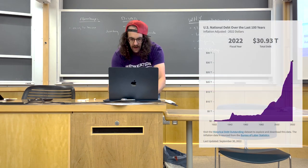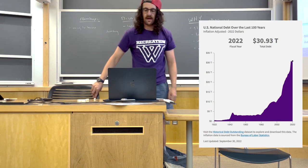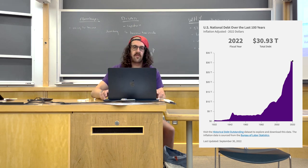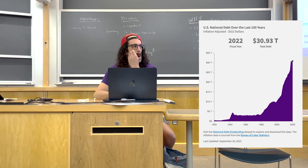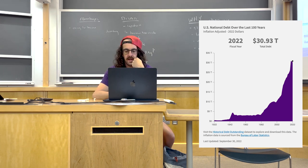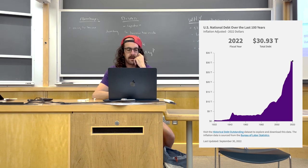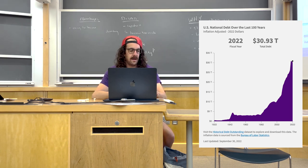This is the US national debt over the last hundred years. We became the reserve currency in 1944 at Bretton Woods. The national debt was basically war debt and didn't do much until about the early 1980s under Ronald Reagan, but something actually began a little bit earlier — in 1971.